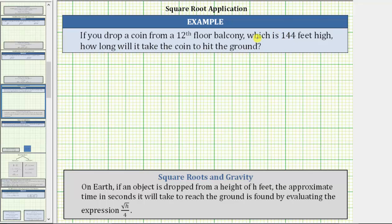Looking at the notes below, on Earth, if an object is dropped from a height of h feet, the approximate time in seconds it will take to reach the ground is found by evaluating the expression the square root of h divided by 4. Just keep in mind this is an approximation and does ignore air resistance.